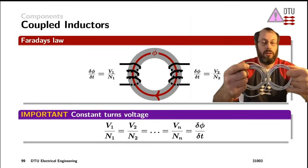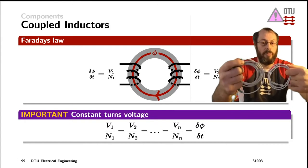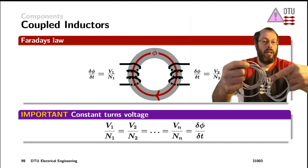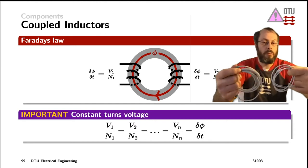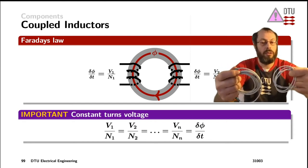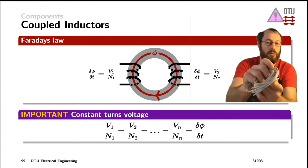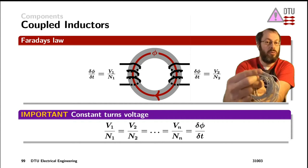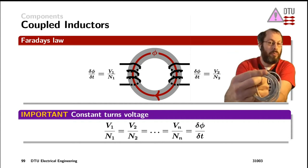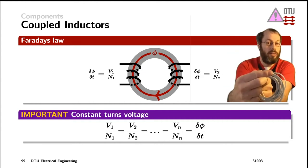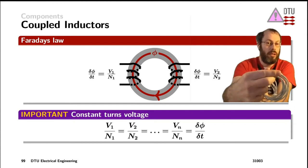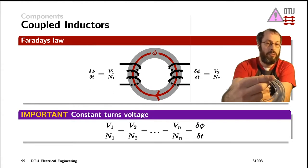In textbooks and also on the slide, the windings are very often drawn like that with the magnetic field in between. Practically, you want very good coupling on a transformer or a coupled inductor, and you put those windings straight on top of each other — you wind into a layer, put them into each other, or first wind the first one and put the other one right on top of it.